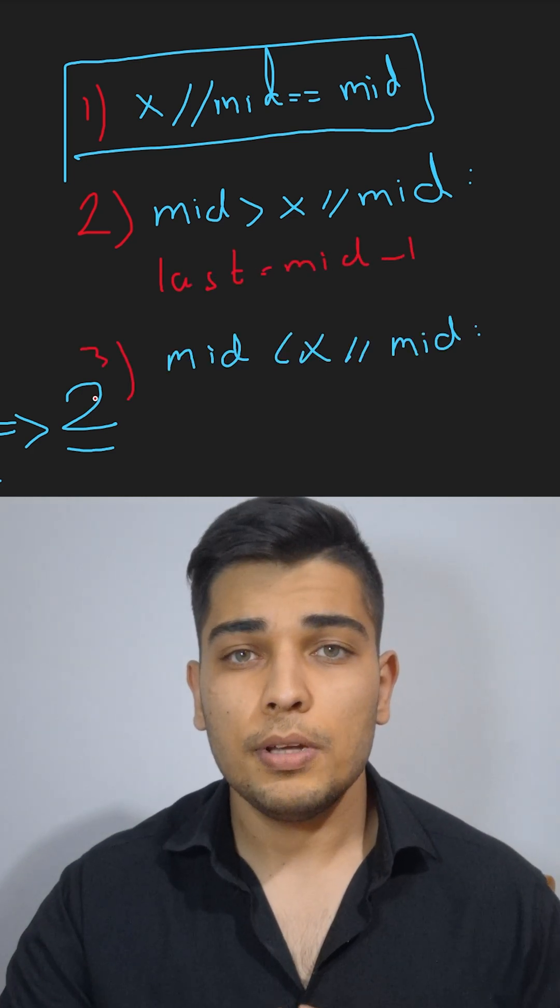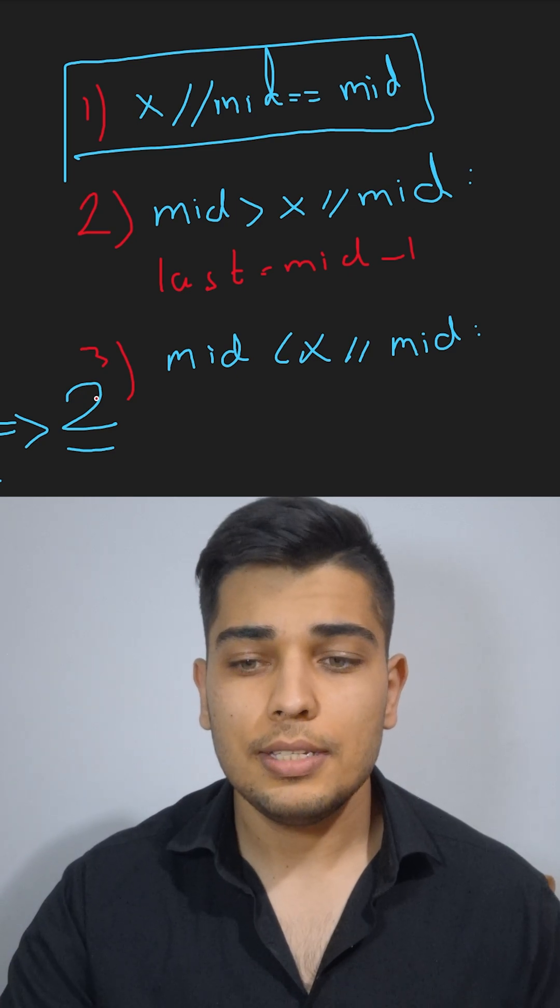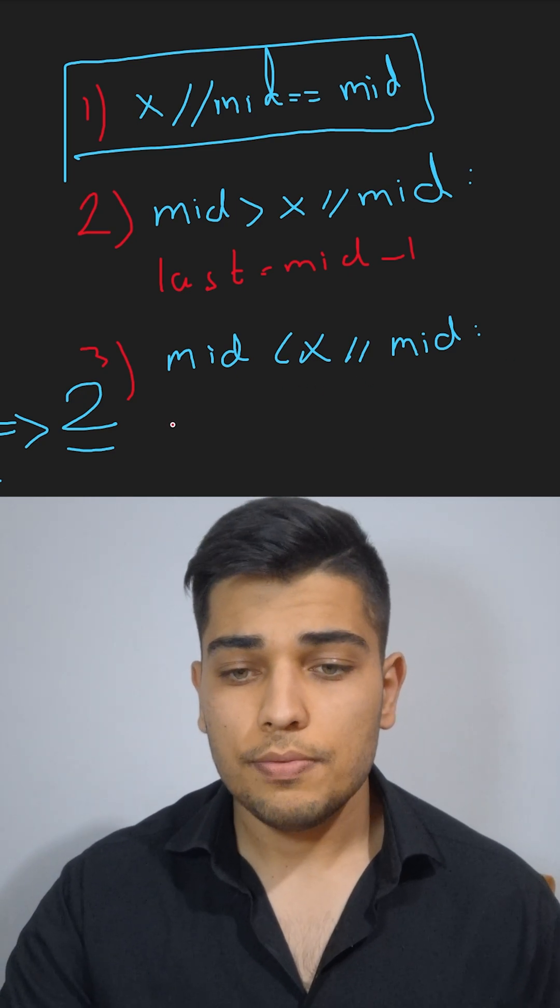And the last possibility is that mid is less than x divided by mid. So in this case, we're going to change the first pointer's location to mid plus 1.